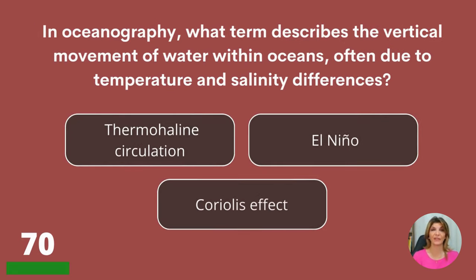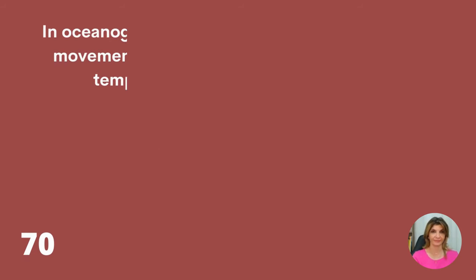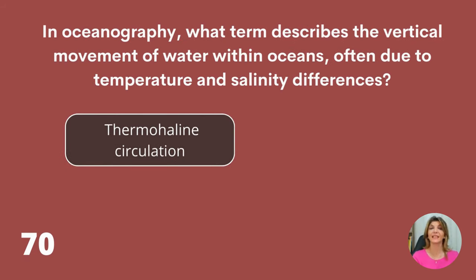In oceanography, what term describes the vertical movement of water within oceans, often due to temperature and salinity differences? Thermohaline circulation, El Niño, or Coriolis effect? Thermohaline circulation.